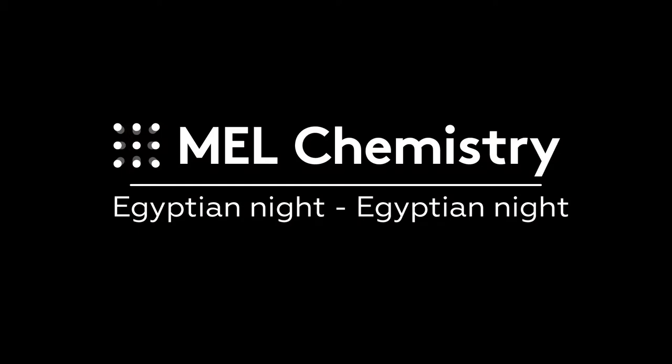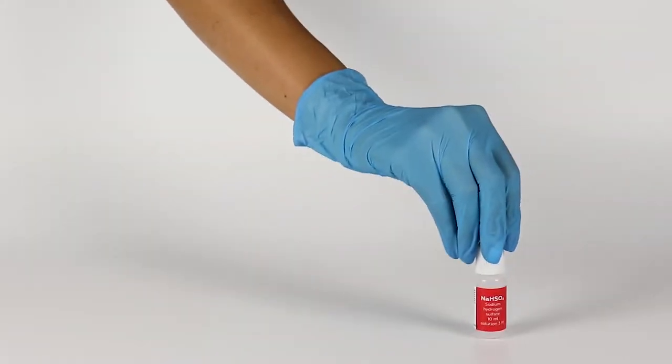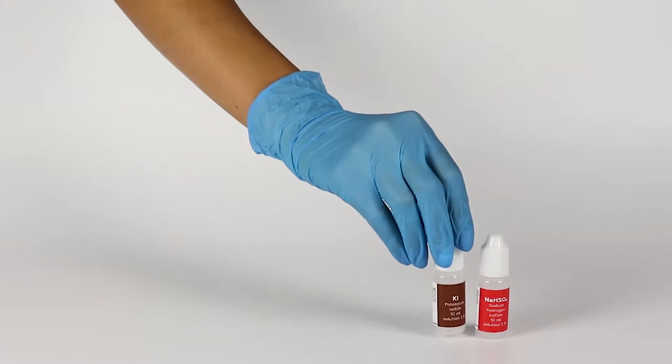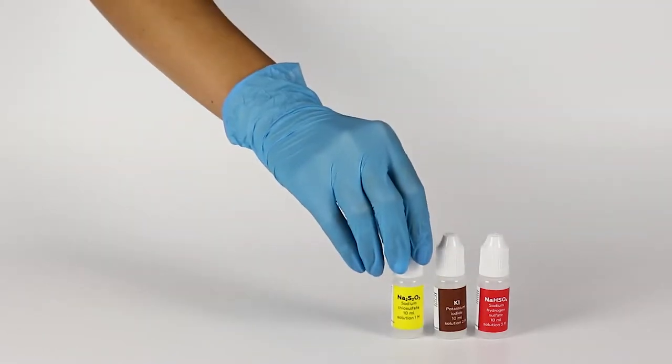For the Egyptian Night experiment, you will need solutions of sodium hydrogen sulfate, potassium iodide, and sodium thiosulfate.